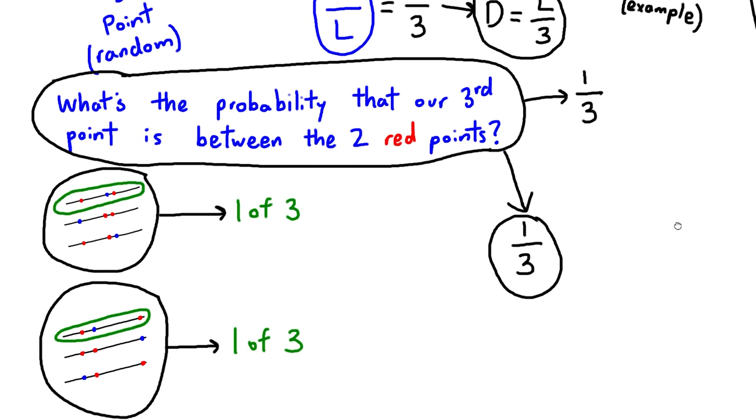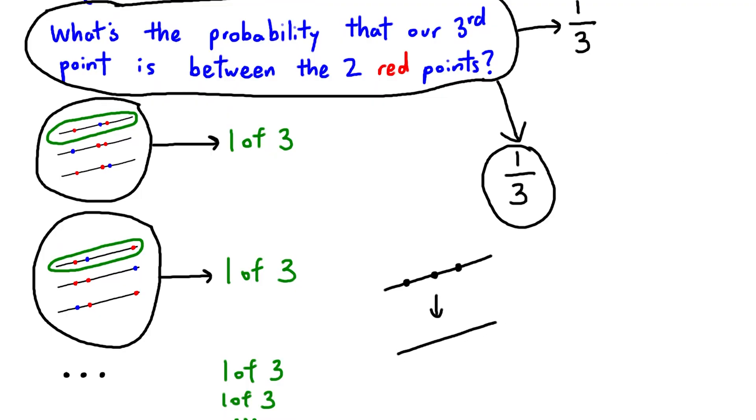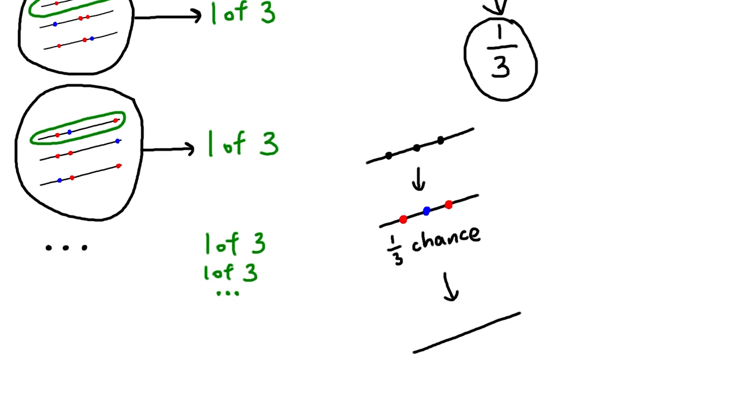Now that was a lot to process, so let's summarize. When we randomly pick two red dots and one blue dot on a line segment, the blue dot has a one-thirds chance of being between the two red dots. This implies that, on average, the distance between the red dots must be a third of the line segment's length.